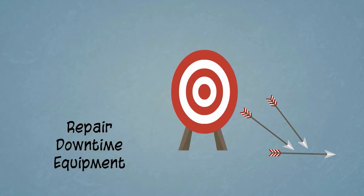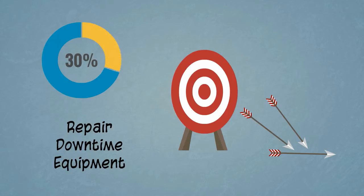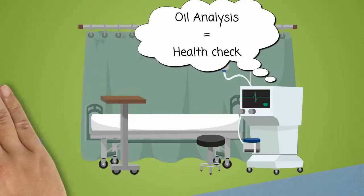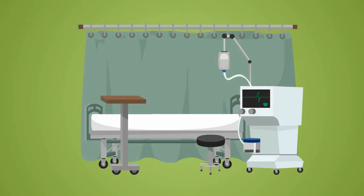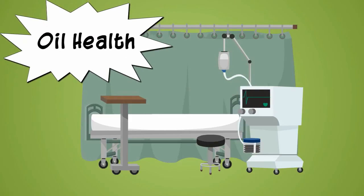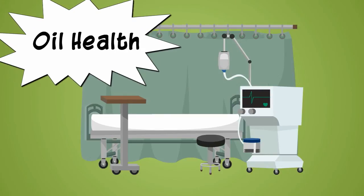Other studies show that a good lubrication program could save as much as 30% of maintenance costs. Oil analysis is the main tool used as a health check to monitor the success of a lubrication program and to spot early signs of potential equipment failures.